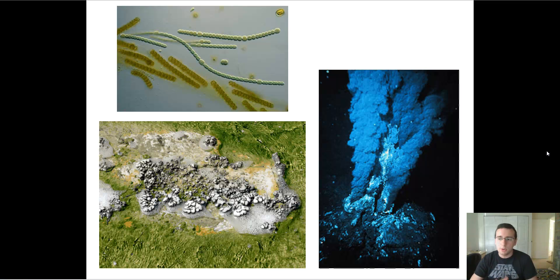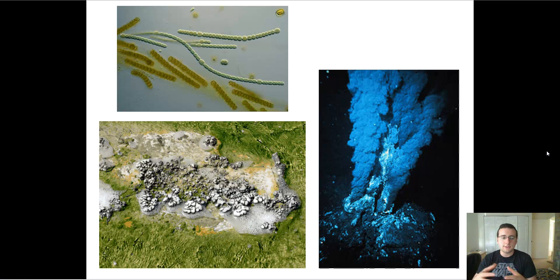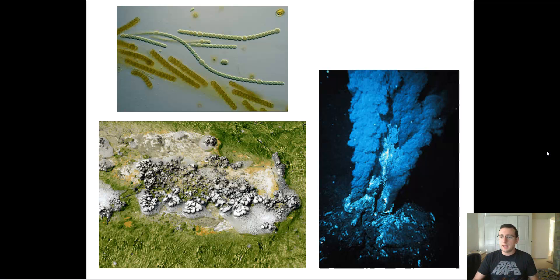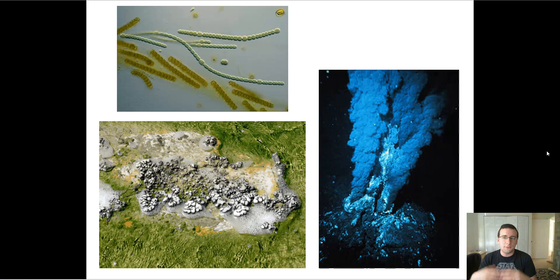There's also chemotrophs, which perform chemosynthesis. Chemosynthesis, instead of using the energy from the sun, uses other chemicals and other types of metabolic pathways to generate energy. So they have different nutrients and different processes entirely.